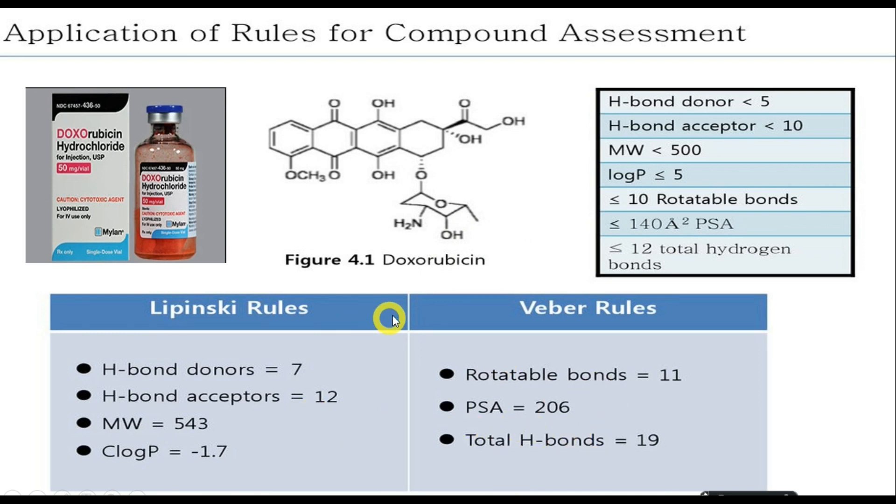Both the rules are essential for the determination of drug likeness. The doxorubicin contains seven hydrogen bond donors and twelve hydrogen bond acceptors, and the molecular weight is 543, and the log P value is equal to minus 1.7. And it contains eleven rotatable bonds and the polar surface area is 206, and the total hydrogen bond is 19. Where you can find these values do not range within the specified conditions. So this drug cannot be subjected to oral bioavailability but was found to work intravenously.